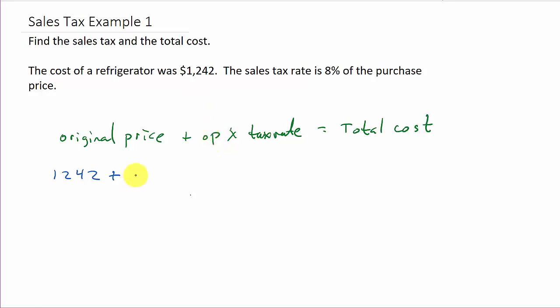Which is $1242 times the tax rate. What's the rate they're charging you on tax? 8%. So times 0.08—we've got to convert it to a decimal. And that's going to equal your total cost.